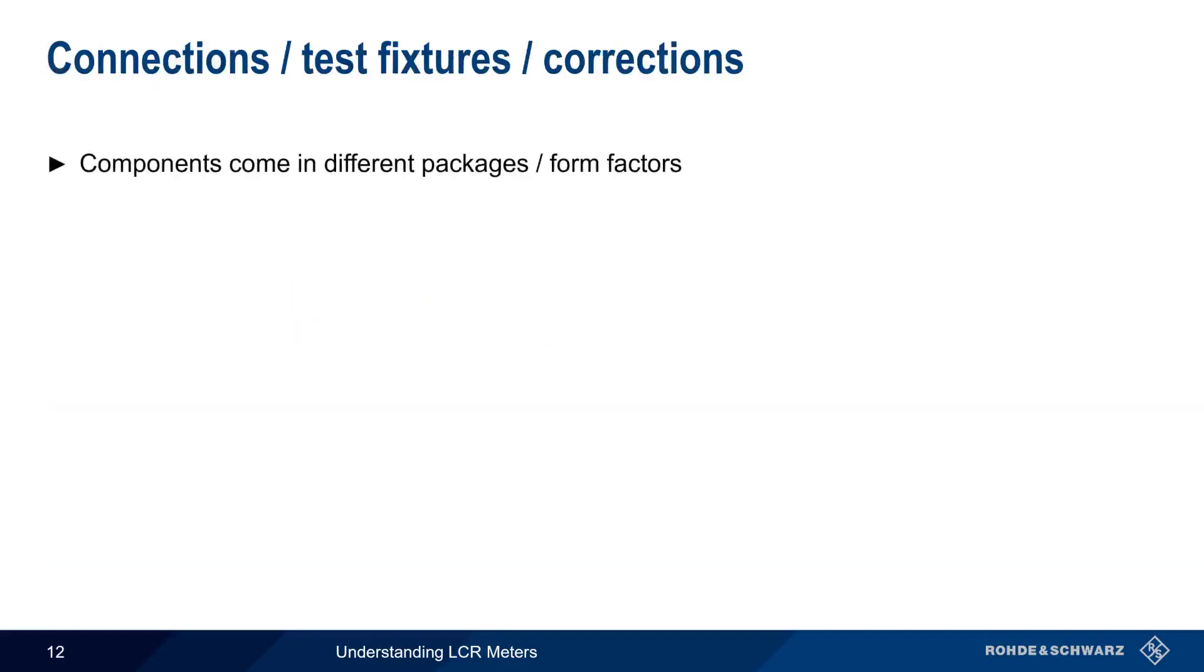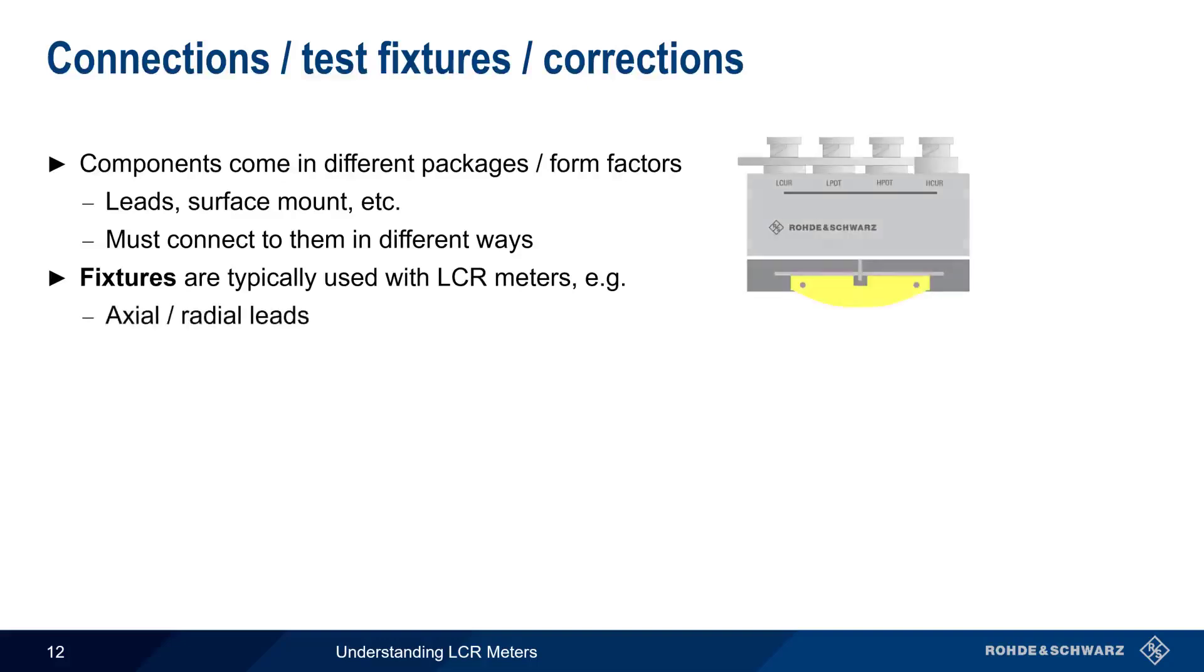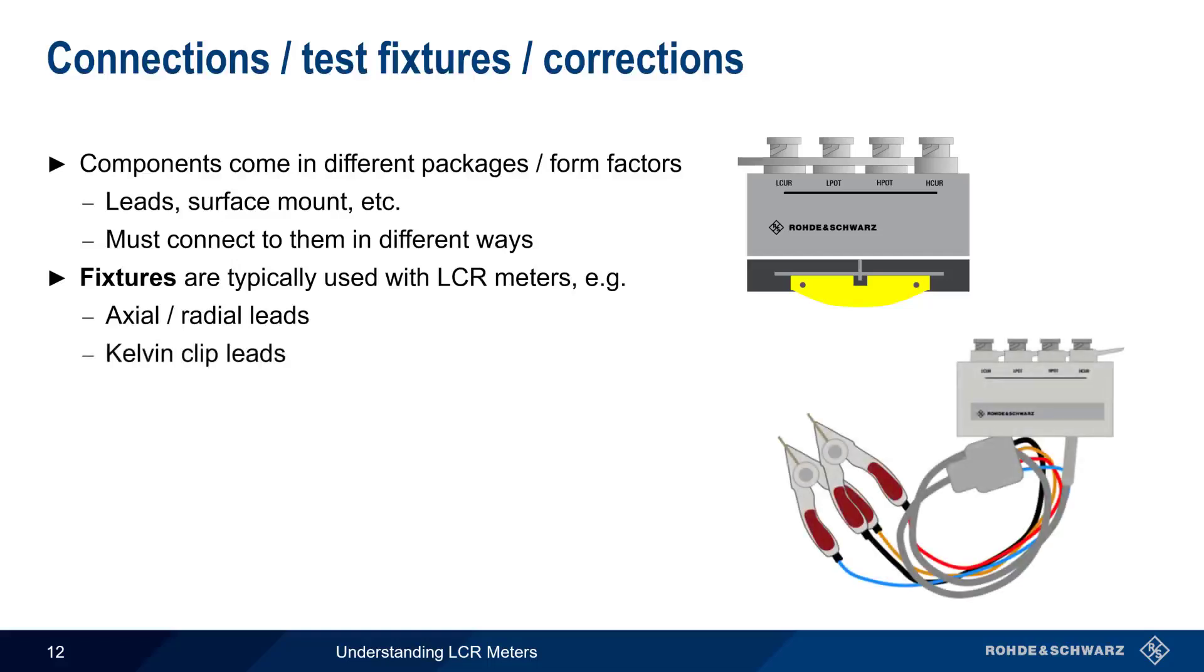Electronic components come in a wide variety of packages or form factors. For example, those with leads, surface mount components, etc. And therefore, an LCR meter must be connected to them in different ways. In order to accommodate this wide range of form factors, different types of fixtures are used. For example, one type of fixture is used for components with axial or radial leads. Another common fixture type uses Kelvin clip leads, something we'll come back to in just a moment. And special fixtures are also used when measuring transformers.